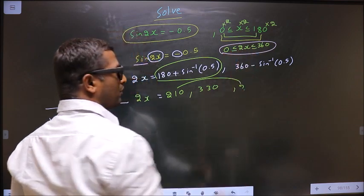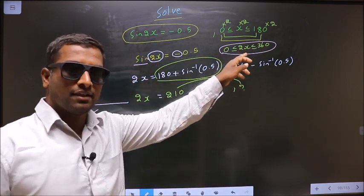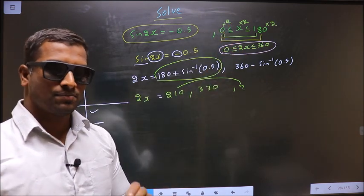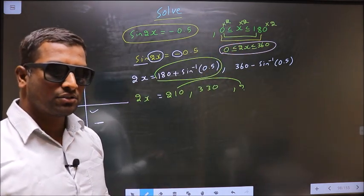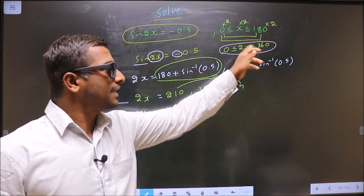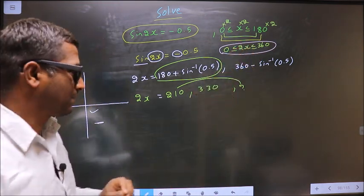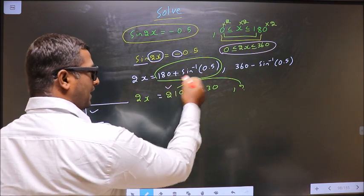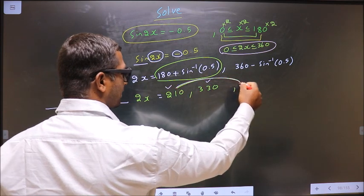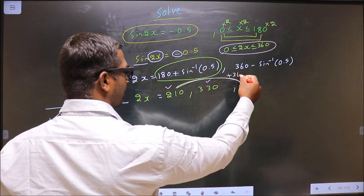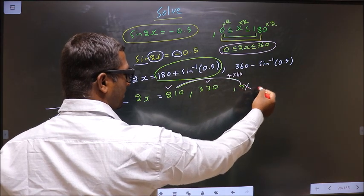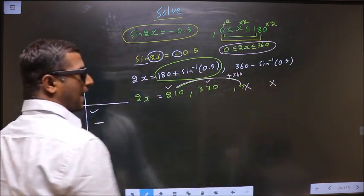So we get 0 less than or equal to 2x less than or equal to 360. Now when 2x lie in this interval, automatically x will lie in this interval. So now you should get all the values for 2x lying in this interval. This lie in the interval, this also lie in the interval. If I find another angle by adding 360 to this, that will not lie in this interval. So this is where I stop. I don't need to find any more angles.